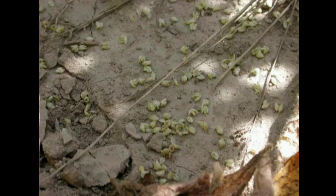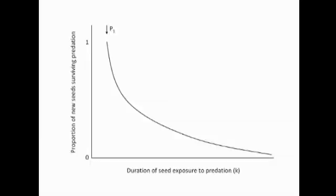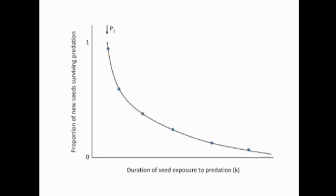Because seed predation has such important impacts on plant demography, ecologists working in many different types of ecosystems are interested in measuring how much seed predation is taking place and what proportion of the seeds dispersed in a given year survive predation. In many predation studies in the ecology literature, predation measurements are made as cumulative time series showing seed survivorship over some period of time — for example, monthly measurements made over the course of a year after an initial pulse of seed dispersal.